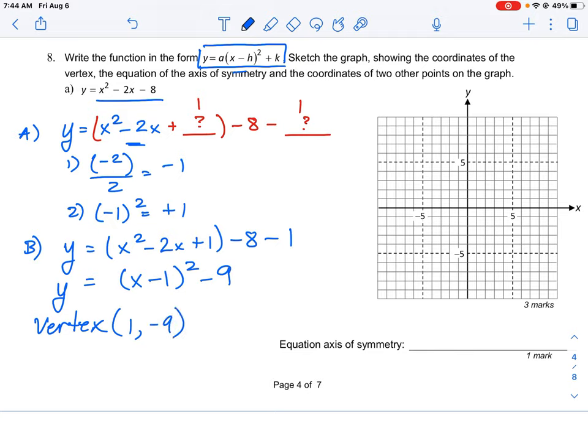So we're going to have 1 and negative 9, which is about right here. The equation of the axis of symmetry is x is equal to 1, because that's where the vertical line would be.